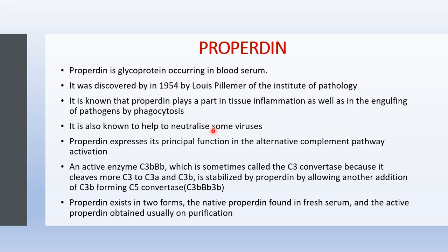The next one is properdin. Properdin is a glycoprotein that occurs especially in blood serum. It was discovered by Lewis Pillemer in the year 1954 at the Institute of Pathology. Properdin plays a part in tissue inflammation as well as in engulfing of pathogens by phagocytosis. It is also known to help neutralize some viruses through the antigen-antibody neutralization reaction.